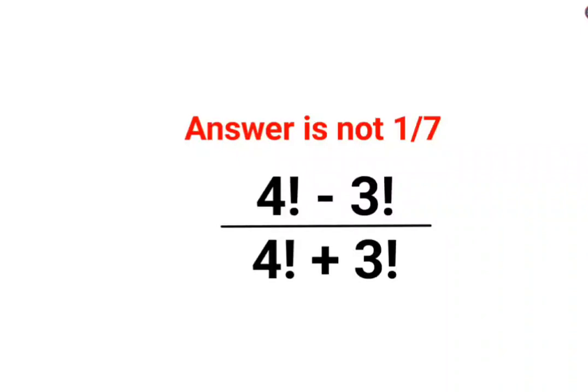Welcome everyone. A lot of people thought that the answer for this question is supposed to be 1 by 7 because 4 minus 3 is 1 and 4 plus 3 is 7.